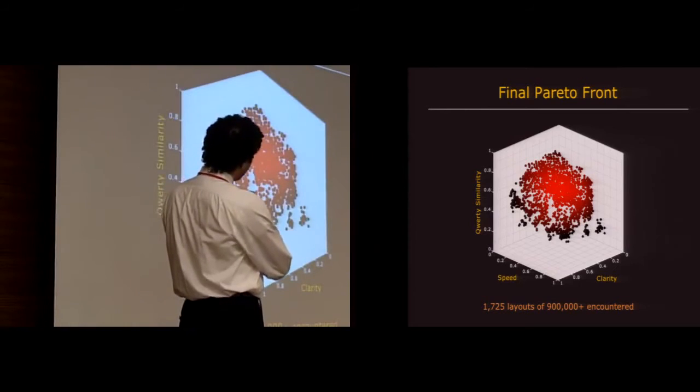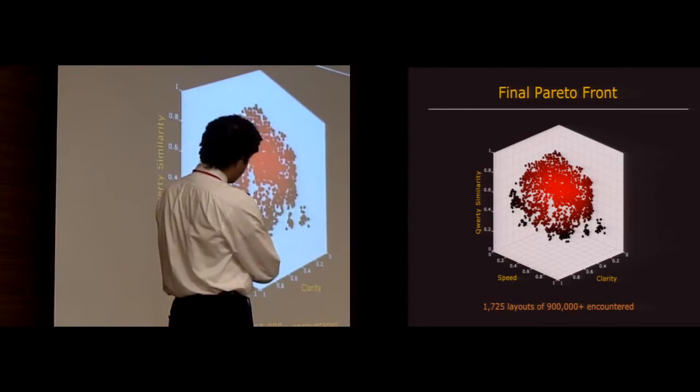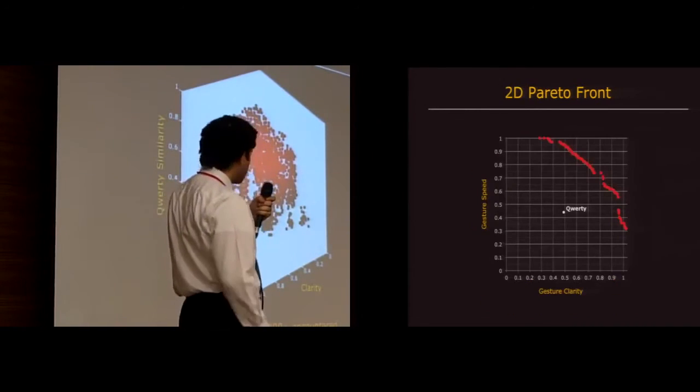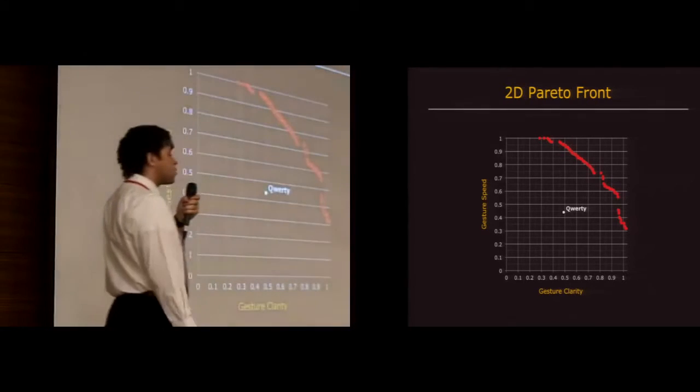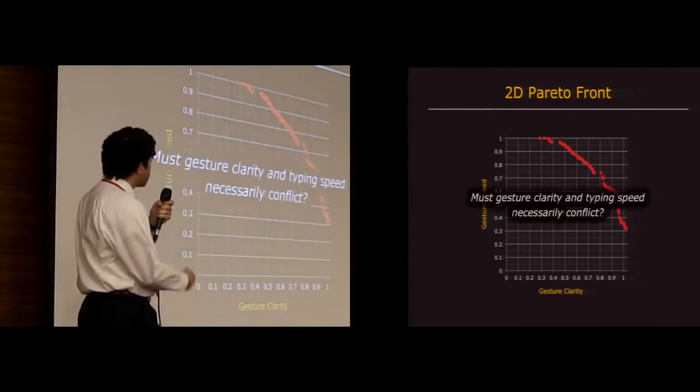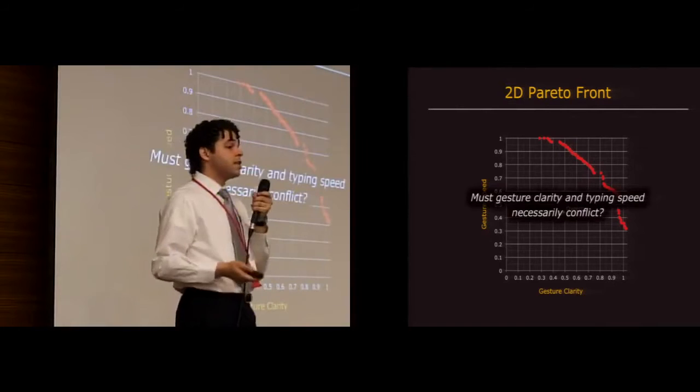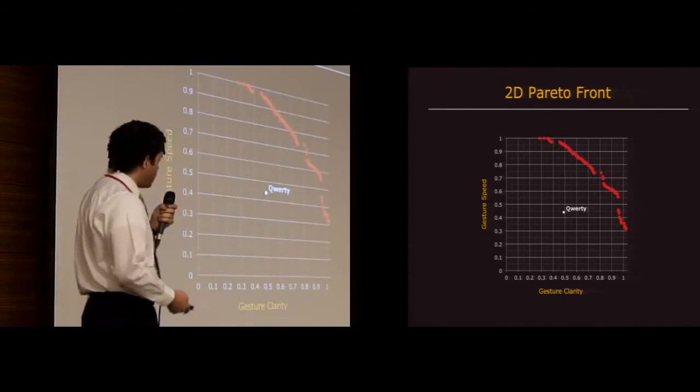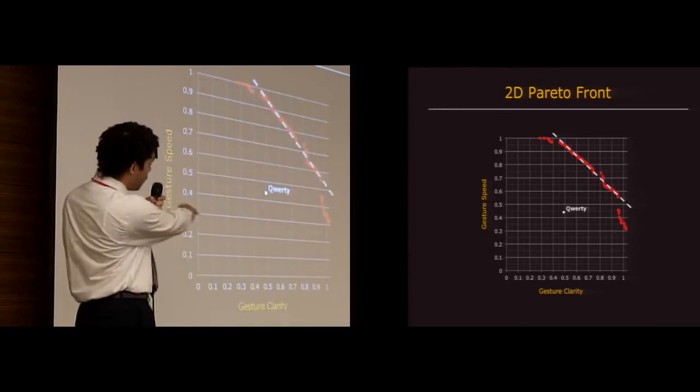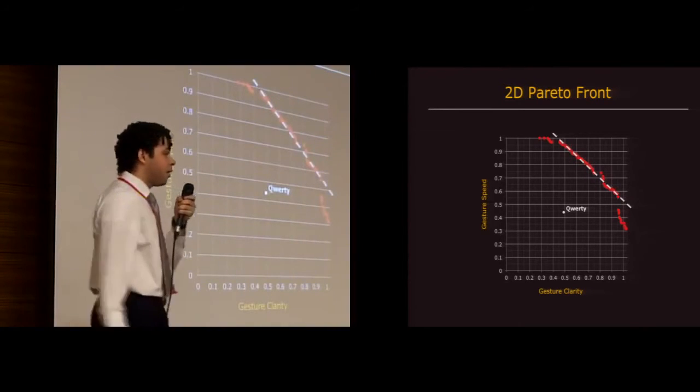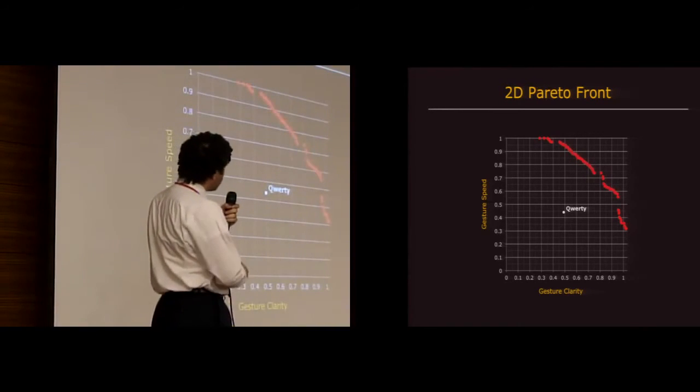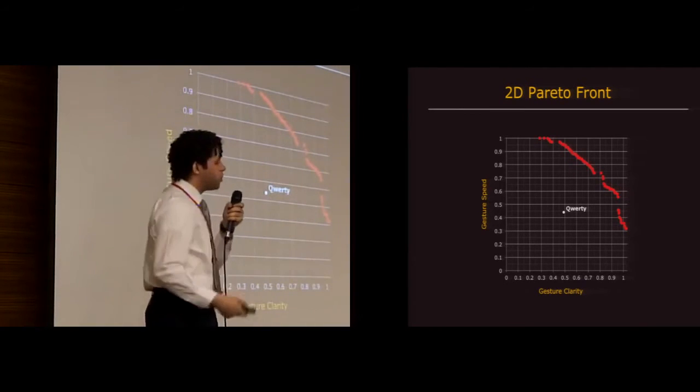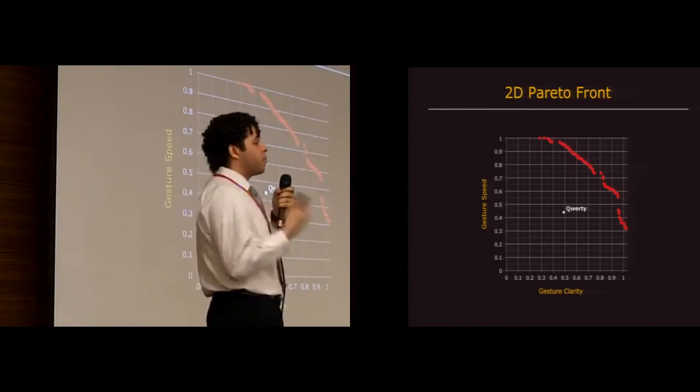So if we take this front and we project it onto the ground here, the speed-clarity plane, we actually get this. And this answers our first key question, which was: must gesture clarity and typing speed necessarily conflict? The answer to that is, while they definitely do conflict—this is a negative 45 degree line over here—you can nonetheless achieve big advances in both speed and clarity compared to QWERTY.